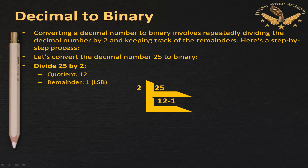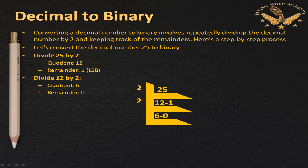Converting a decimal to binary involves repeatedly dividing the decimal number by 2 and keeping track of the remainders. Let us convert the decimal number 25 to binary. Divide 25 by 2: the quotient is 12 and the remainder is 1. We perform modulo division each time. Next, divide 12 by 2, which results in quotient 6 and remainder 0.